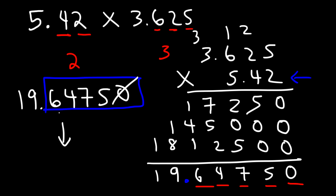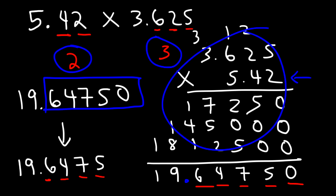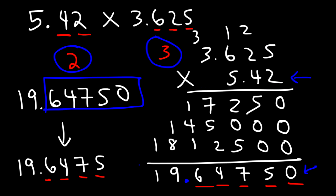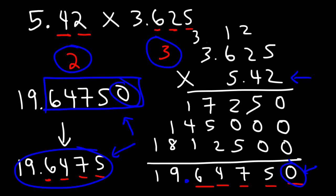However, we really don't need that trailing 0. If you type this into a calculator, it's going to display 19.6475 — only 4 digits to the right of the decimal point. This technique incorporates the 0 you get from the multiplication process, but the answer is still correct. You just need to drop off the 0 if it's at the end. If it's in the middle, you need to keep it. But a trailing 0 is not significant. So that's it — now you know how to multiply decimal numbers. Thanks for watching.